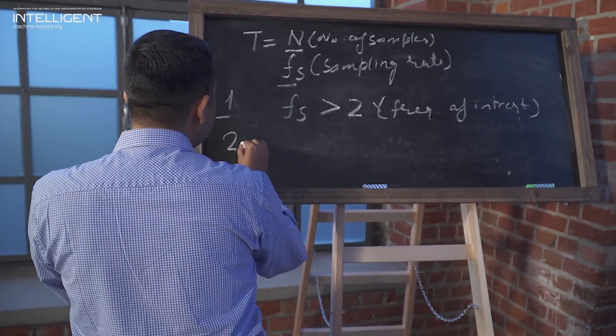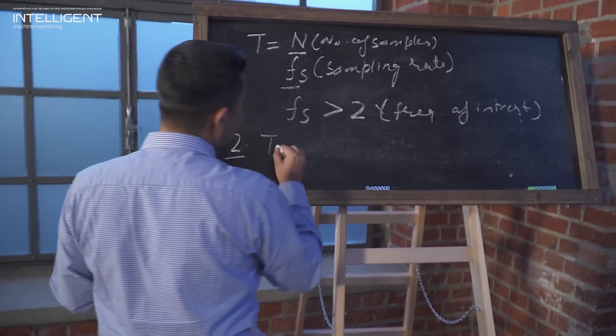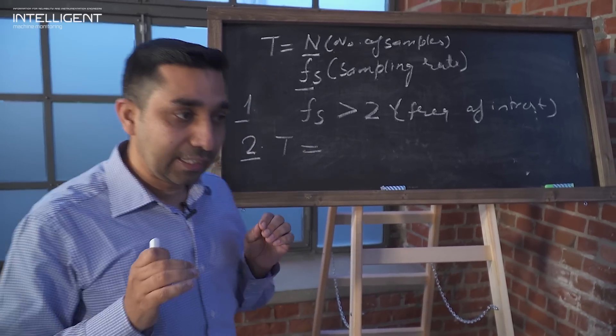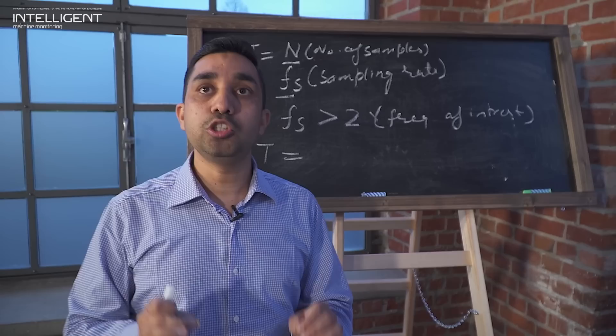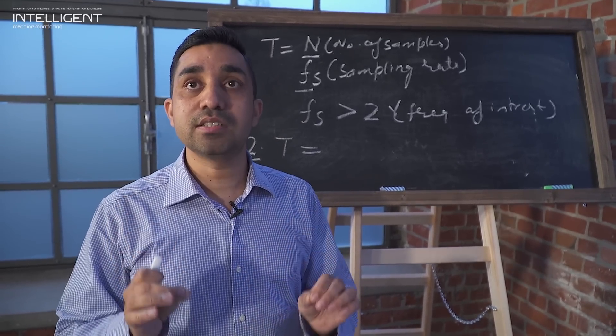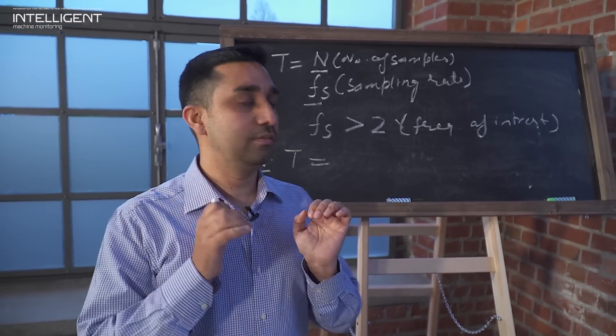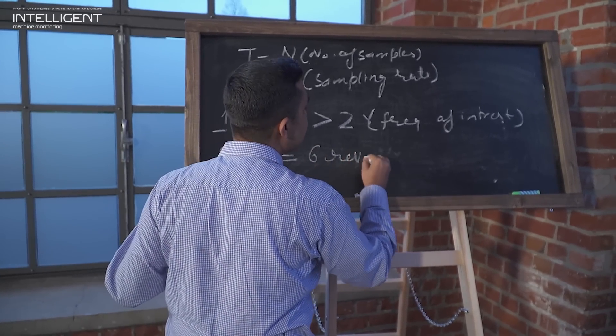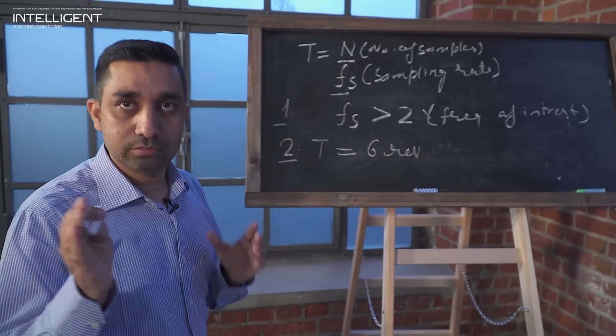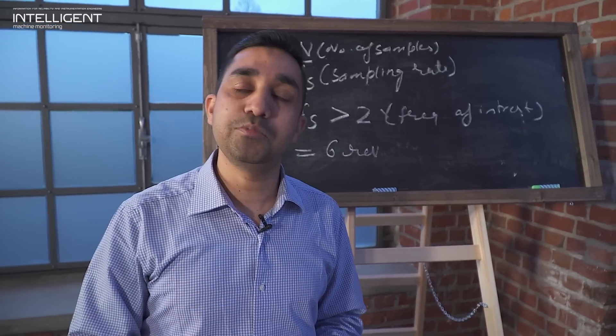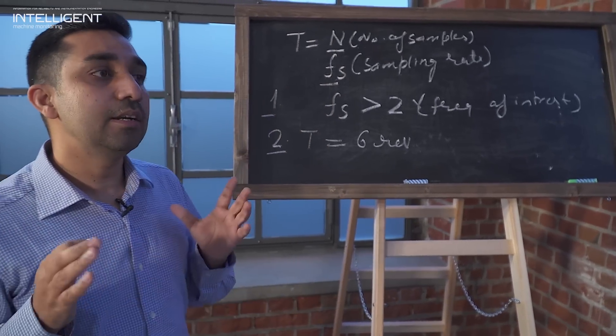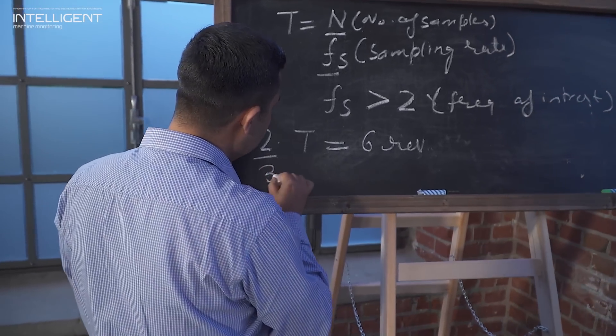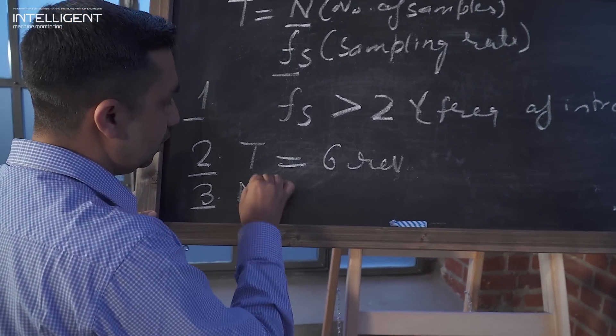Second rule for the time period. Your time period should be at least able to capture six shaft revolutions. At least minimum of six revolutions you should capture in the time signal.